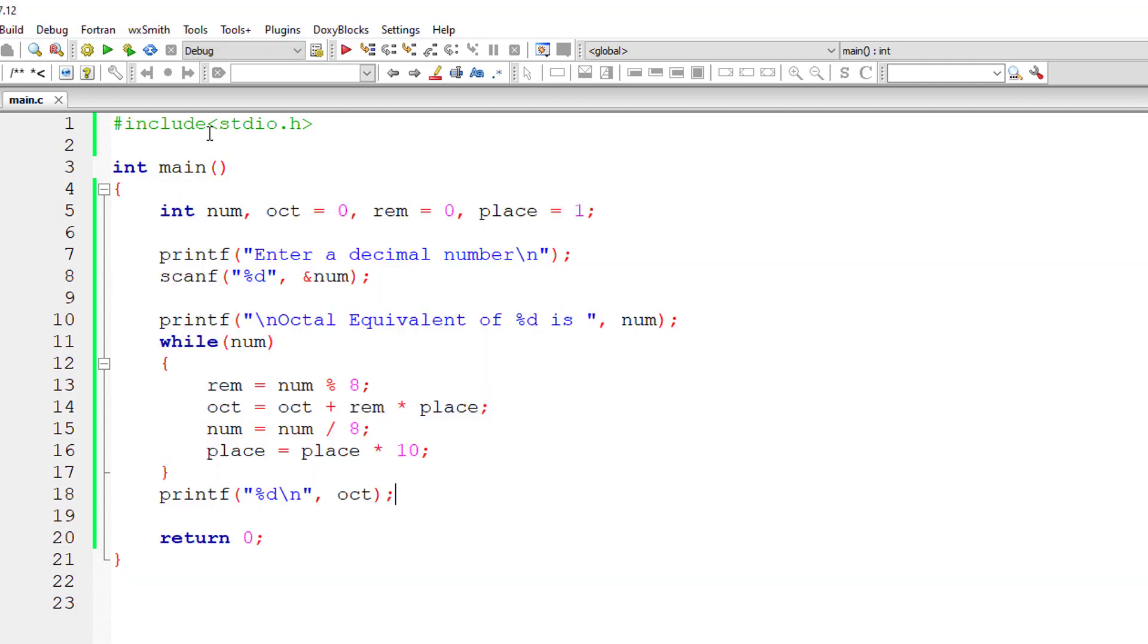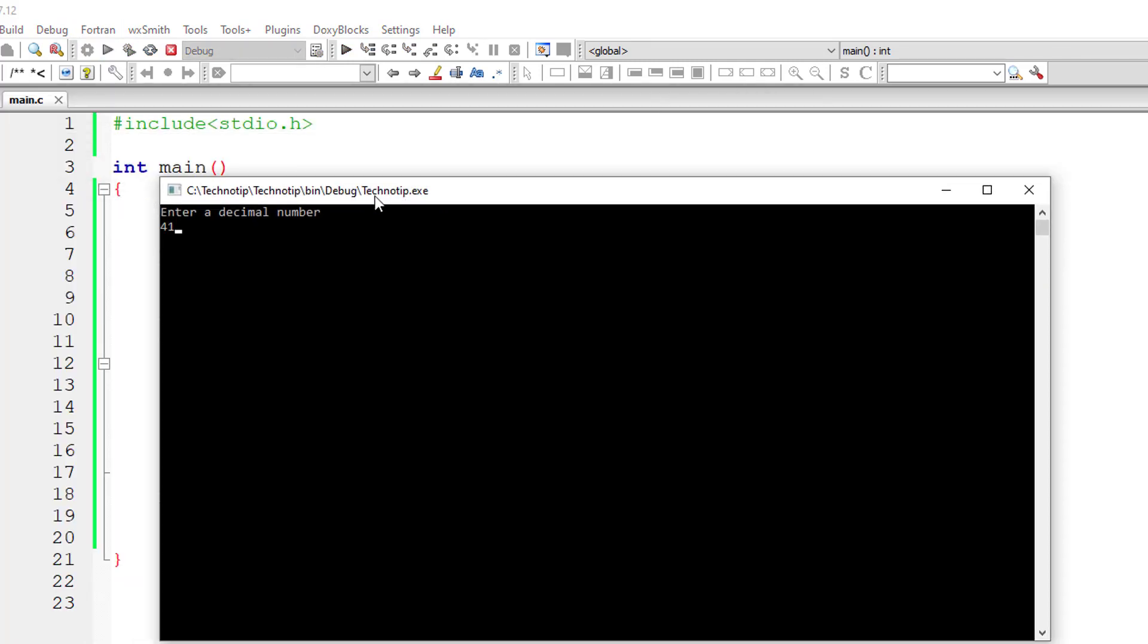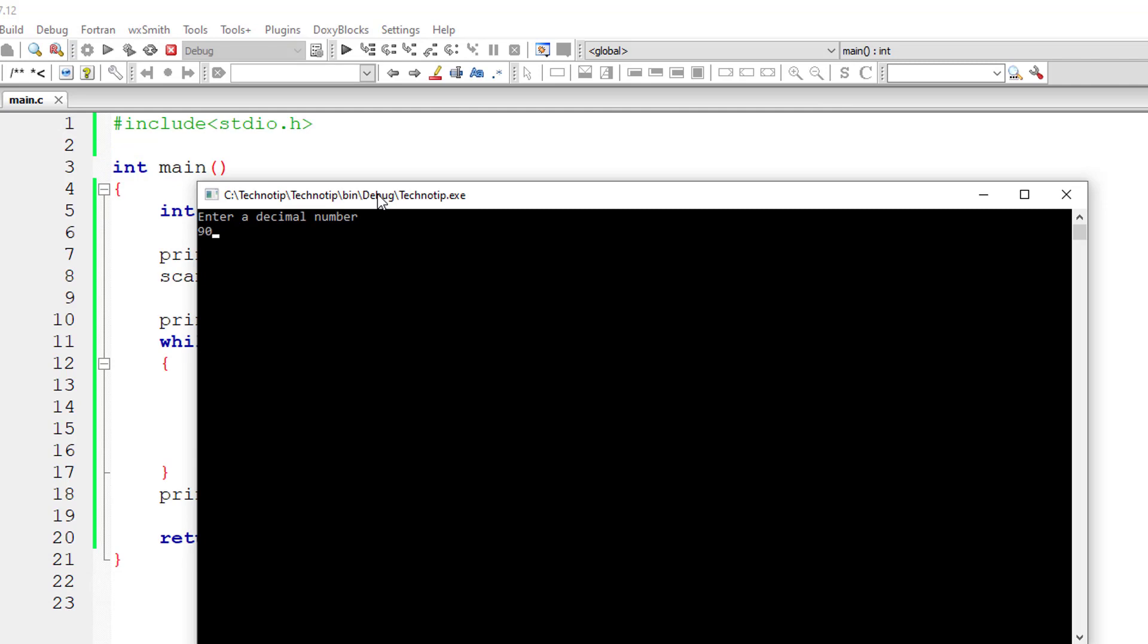Let me check for another number, slightly bigger number. So octal equivalent of decimal 41 is 51. Observe here the octal equivalent digits isn't going above 0 to 7.